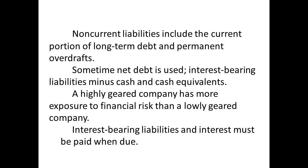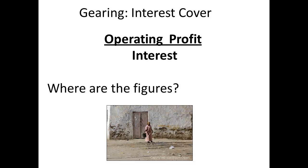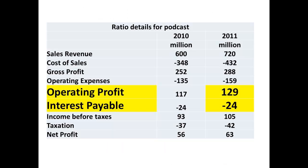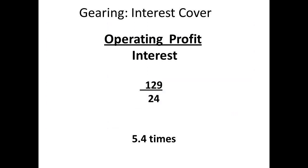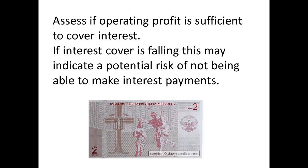The point about including interest from interest-bearing liabilities is that any interest must be paid when due. The next ratio is called the interest cover, calculated by dividing the operating profit by the interest. Both figures come from the income statement: operating profit is £129 million and interest payable is £24 million. 129 divided by 24 gives an interest cover of 5.4 times. This ratio assesses whether operating profit is sufficient to cover the interest. If the interest cover is falling, it can indicate a potential risk of not being able to make future interest payments. An investor would be interested in comparing this year's value with the previous year.